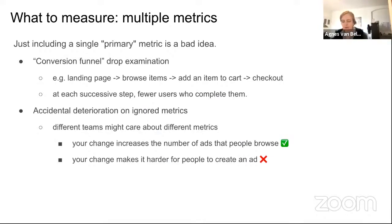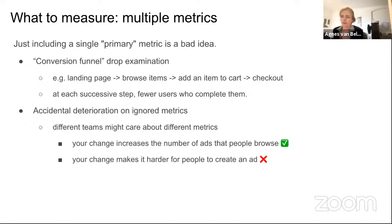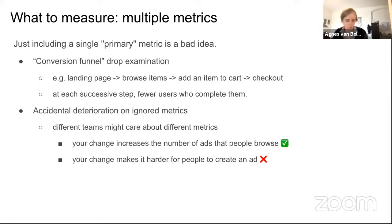Including only a single primary metric is a bad idea for two reasons. First, you usually have a conversion funnel on your platform — users go to a landing page, browse items, add to cart, then check out — and if you are testing a feature, you want to know where exactly in the funnel a possible drop happens. Including metrics covering this funnel lets you see suspicious drops and debug what is going on, and shows at what points your feature is better.